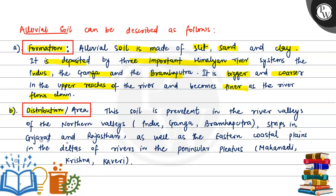The second point is distribution. This type of soil is prevalent in the river valleys of the northern plains — Indus, Ganga, and Brahmaputra — and in strips in Gujarat and Rajasthan, as well as the eastern coastal plains in the deltas of rivers like Mahanadi, Krishna, and Kaveri.